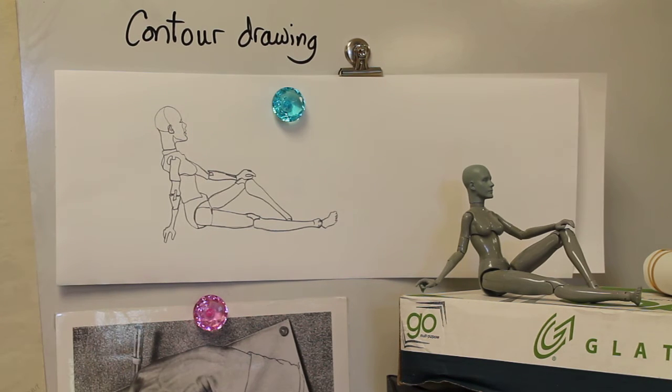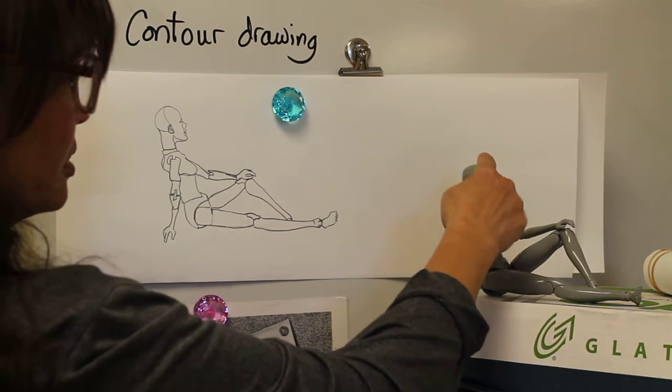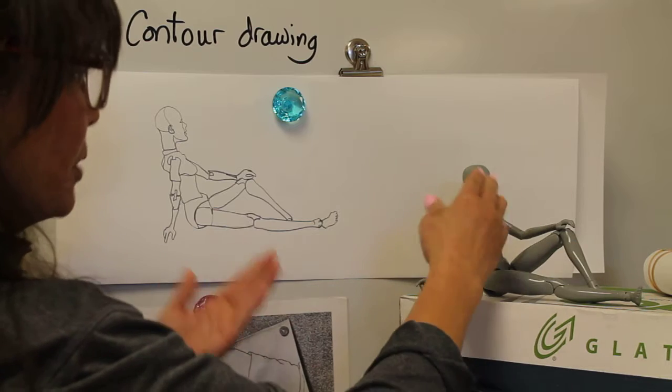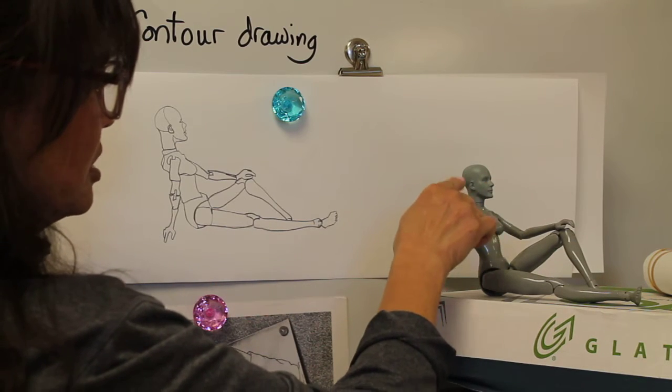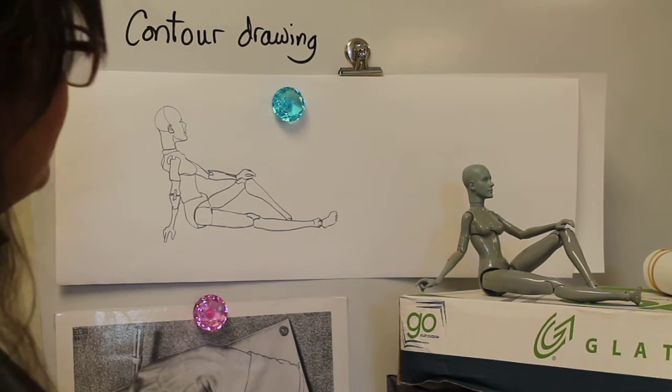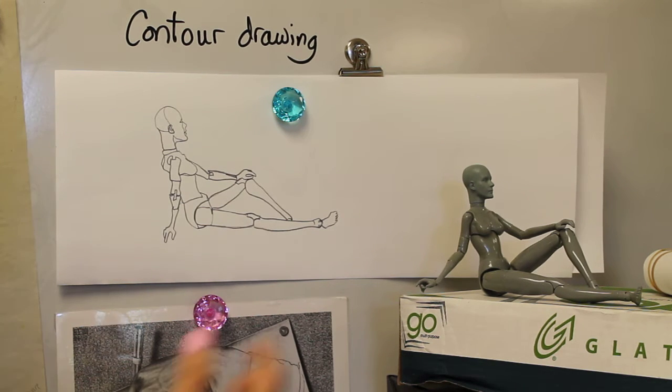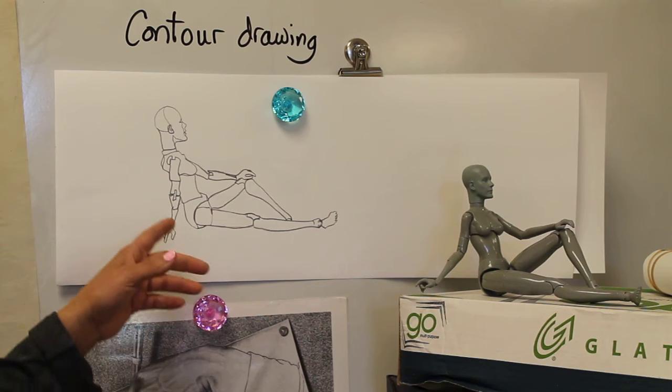This is more like capturing the, not just the outer edges, but also the important contours that come into the figure or whatever it is you're drawing of your subject. So there's different types of contour drawing, but it mainly concentrates on important edges and lines coming in.